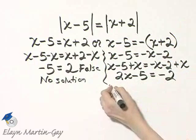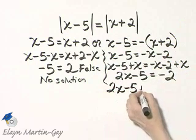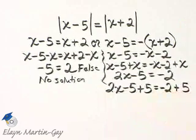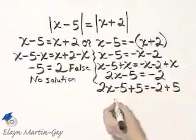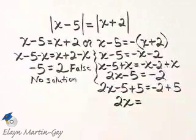I'll add 5 to both sides. So here's the left side, and I will add 5. Here's the right side, and I will add 5. 2x minus 5 plus 5, these subtract out, and I have simply 2x, is equal to negative 2 plus 5, and that is 3.